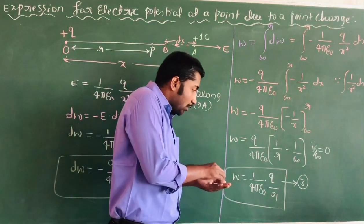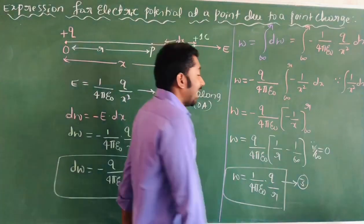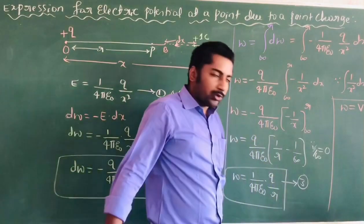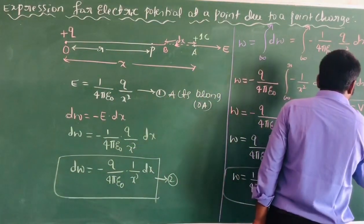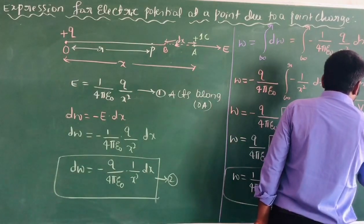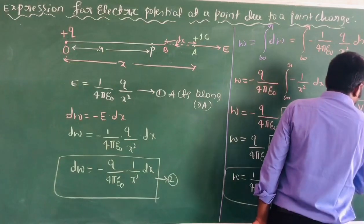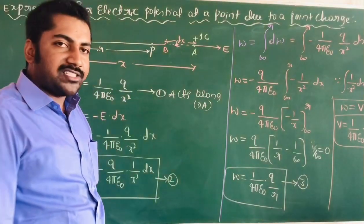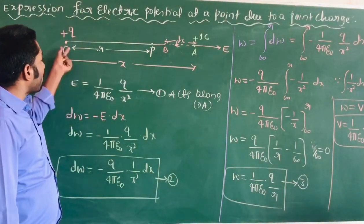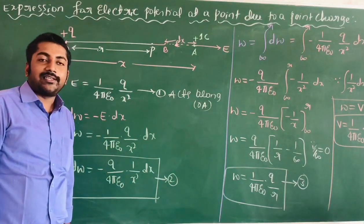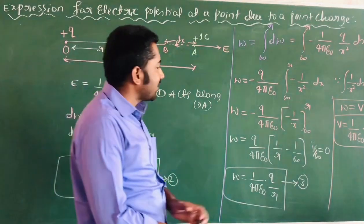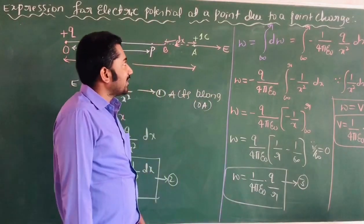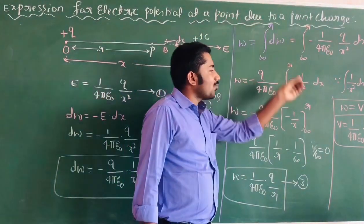This work done is equal to the electric potential, W = V. Therefore, φ = 1/(4πε₀) × Q/R, which is the expression for the electric potential at a point due to a point charge.